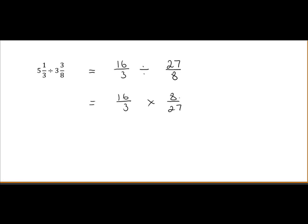We multiply top by top: 8 by 16 equals 128. 3 by 27 equals 81. Our answer is 128 over 81. There's no number that will divide evenly into 128 and 81, so we can't break it down further. But as a mixed fraction, it's 1 and 47 over 81. The reason is 81 into 128 goes once with remainder 47.